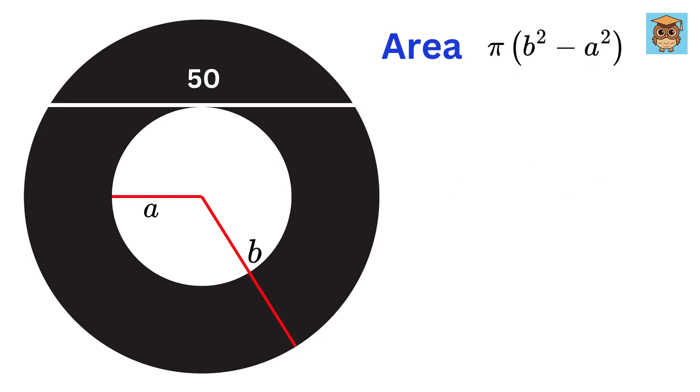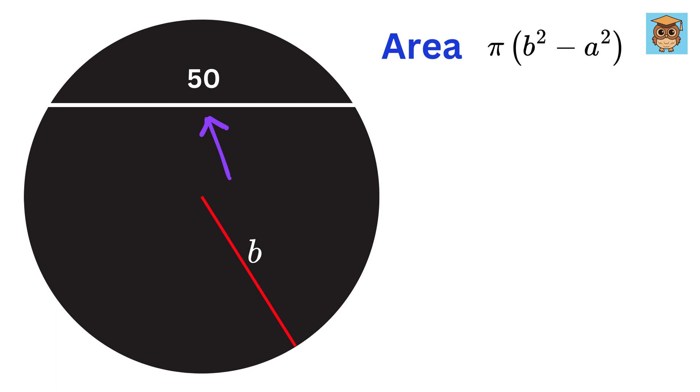Now, what can be the next step? We have this line as a tangent to the inner circle, and it also acts as a chord for the outer circle.